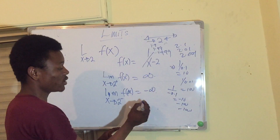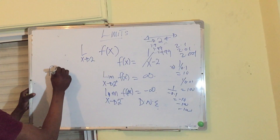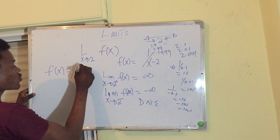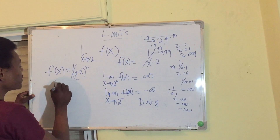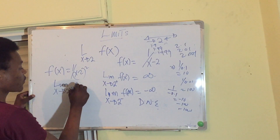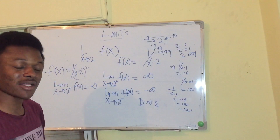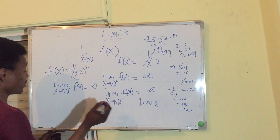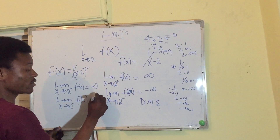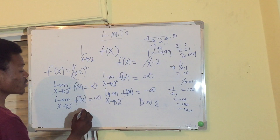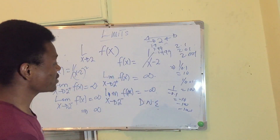So this limit does not exist. Another case: f(x) = 1/(x−2)². Since we are squaring, the denominator is always positive. So approaching 2 from the positive direction gives positive infinity, and from the negative direction also gives positive infinity — both sides give the same result, so the limit is infinity.